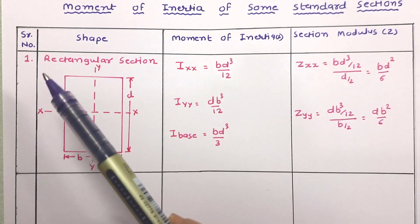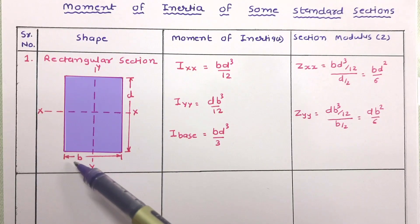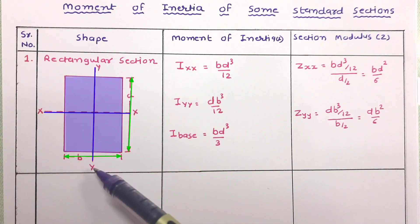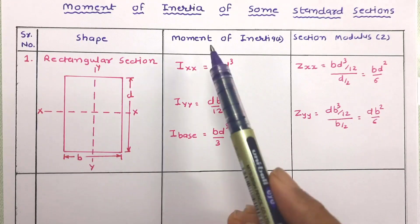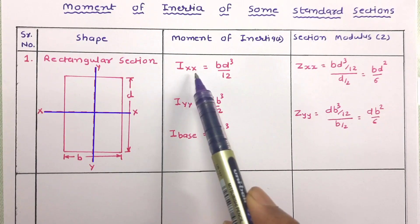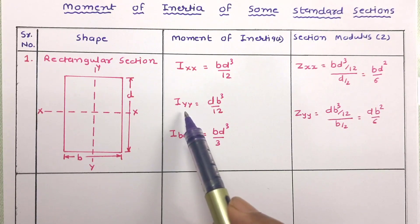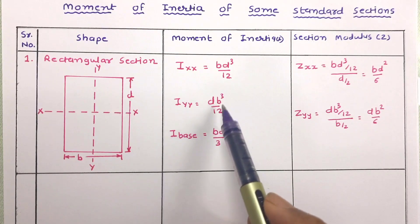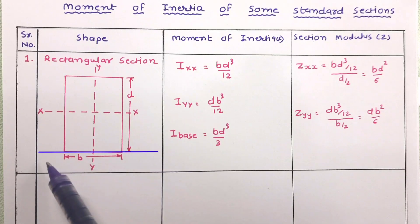The first shape is the rectangular section, which has width b and depth d. The xx and yy axes are centroidal axes passing through the centroid. The moment of inertia about the xx axis is I_xx = bd³/12, and about the yy axis is I_yy = db³/12. The moment of inertia about the base is bd³/3.